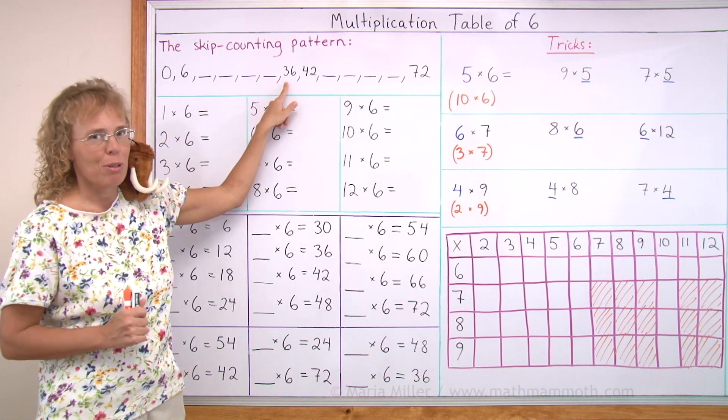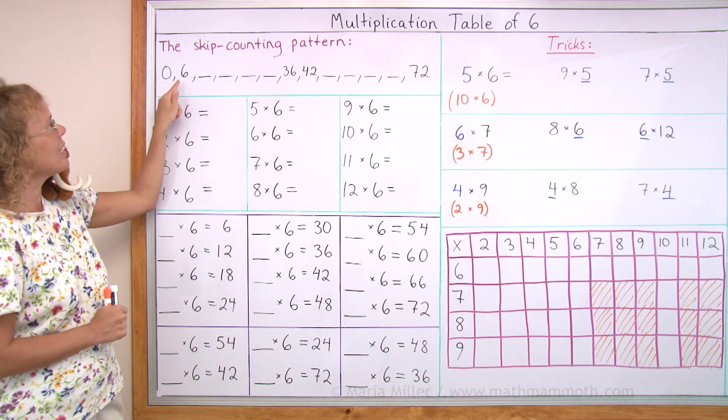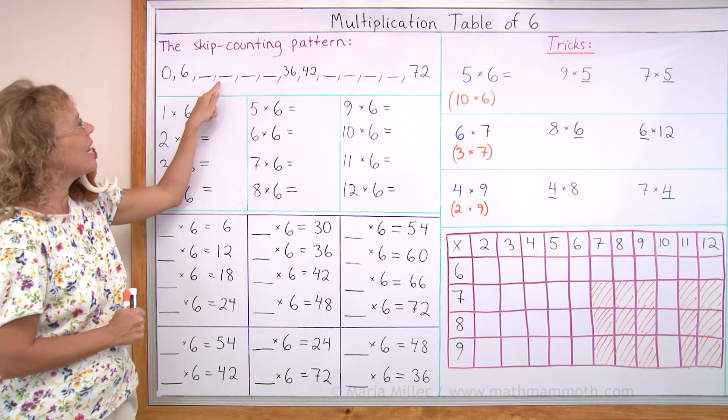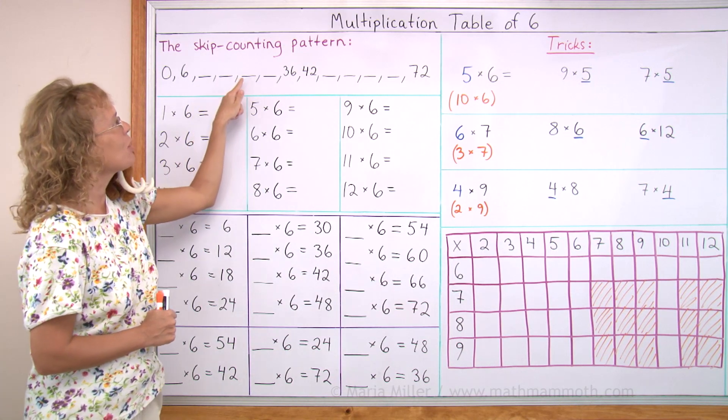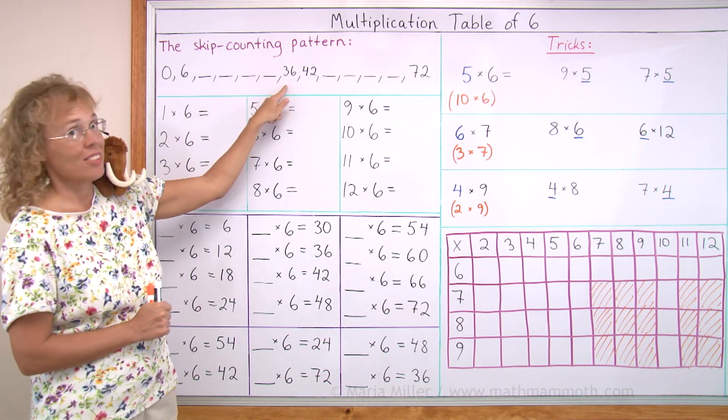That's our halfway point. So let's do that again: 0, 6, 12, 18, 24, 30, and 36.